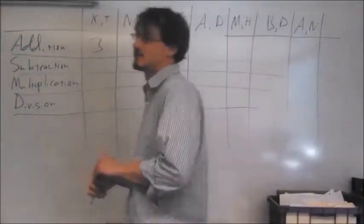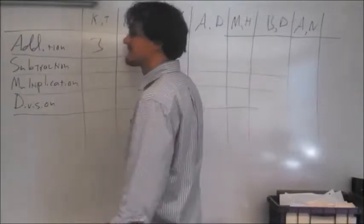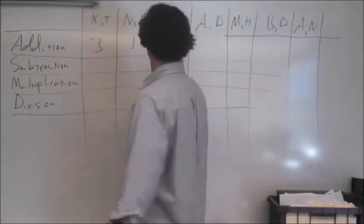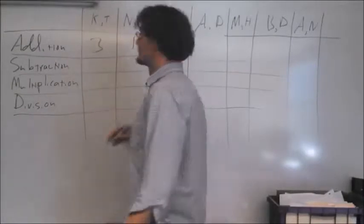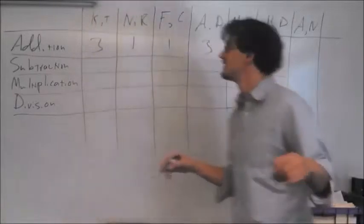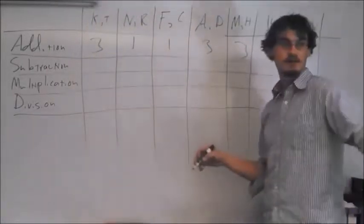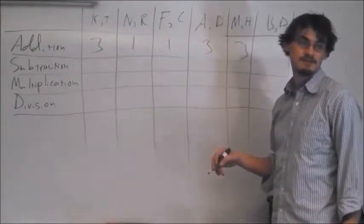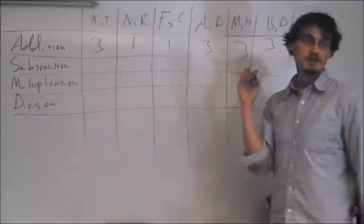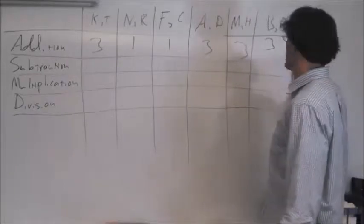Okay, over here, KJ, DJ, what do you guys have for addition? Number three. Nathan and Ryan, what do you have for addition? One. Franklin and Colter, what do you have for addition? One. Three. Three. Three. Who's next? Brianna. Dakota. Three. Alicia and Natalie, three.